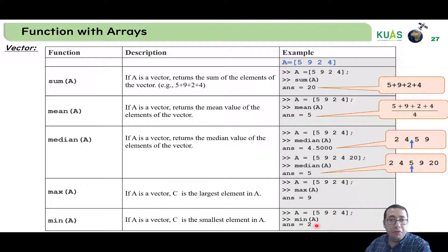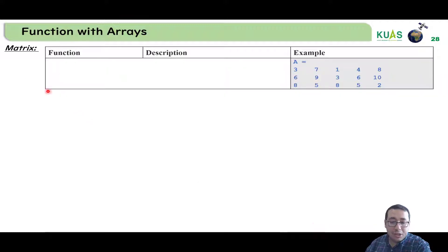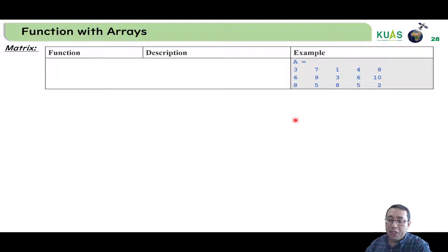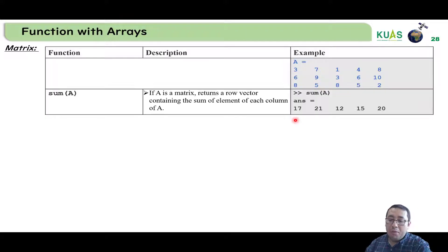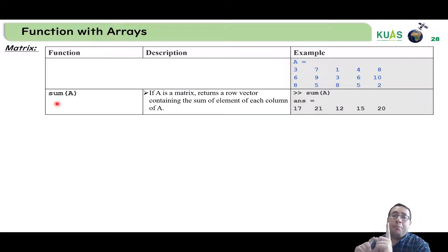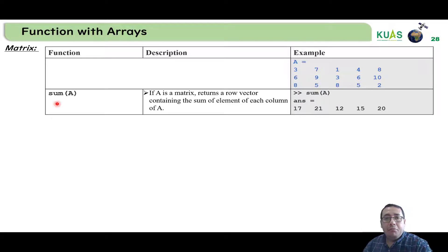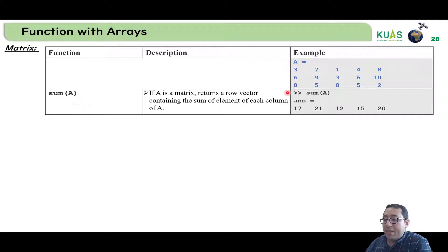All of these were for the vector case. How about the matrix? For example, if we have matrix A with 3 rows and 5 columns, what if we need to estimate the summation? The summation of a matrix doesn't give one number — this is unique to MATLAB. When we write sum(A), it will estimate the sum of each column.